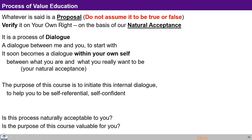Each one of us can ask our natural acceptance and get the answer. You don't have to look around; you don't have to ask other people. You have to ask yourself. We verify it on the basis of our natural acceptance. We can also verify it on the basis of our living with other human beings and the rest of nature — that is the experiential validation. When I'm living on the basis of this proposal with human beings and it leads to mutual happiness, or working with the rest of nature leads to mutual prosperity and mutual enrichment — if that is happening, then it is a right proposal. Otherwise, it is not.